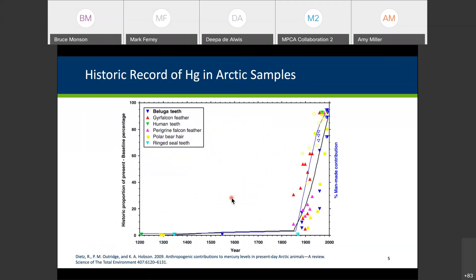We don't actually have a good long-term record going back to the pre-industrial era for fish, but we pretty much assume that fish mercury also rose. In the Arctic, they have hard tissues — teeth, feathers, and hair — going back to 1200 AD, with human teeth measurements showing the baseline. When you hit 1850, all these concentrations in various tissues rapidly increased up until the current period.